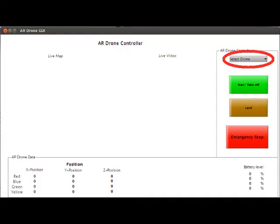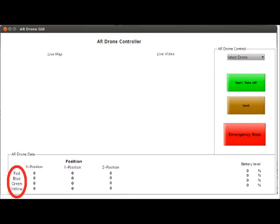Also note the drop-down menu, which allows the user to select which drone to control. The XYZ position and battery level for each drone is displayed at the bottom of the GUI.